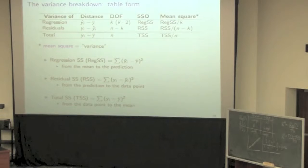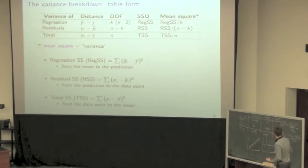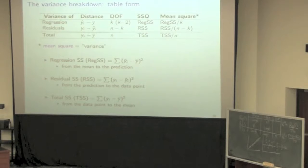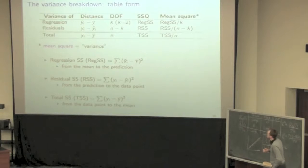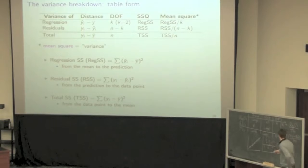The one thing I want to touch on is degrees of freedom, and this might help you understand degrees of freedom from a statistical point. We have n data points with which we're going to build our regression model. I can use those data points to fit my model, and to fit the regression model I'm going to use k parameters. As a result, the degrees of freedom due to the residuals are n minus k.